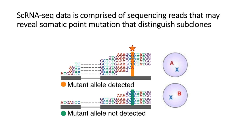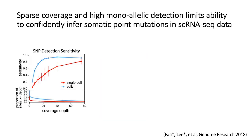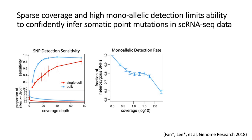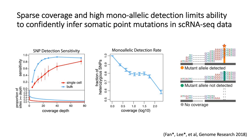The general intuition is that single cell RNA sequencing data is comprised of sequencing reads from expressed genes that may harbor mutations. So in theory, if a mutation is present within the exon of an expressed gene, we should be able to detect the mutation and use these mutation patterns to distinguish genetically distinct cancer subclones. However, in practice, sparse coverage and high monoallelic detection limits our ability to confidently infer somatic point mutations. Compared to bulk RNA-seq, single cell RNA-seq has much poorer sensitivity for detecting single nucleotide variants. Even for highly expressed genes, monoallelic detection — by which only one allele is sequenced — further limits our ability to confidently call heterozygous mutations, which may be present on the non-detected allele. And finally, we simply may not have coverage at all the genomic positions of interest, and in such a case we would not be able to say whether a cell does or does not have a particular mutation.